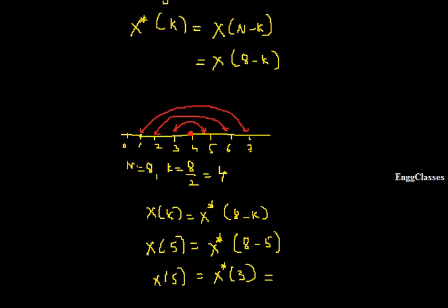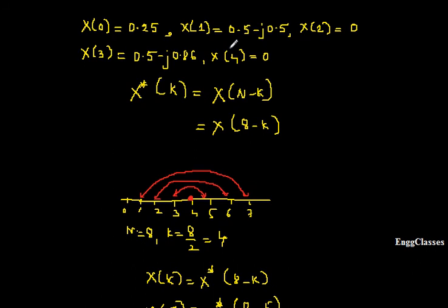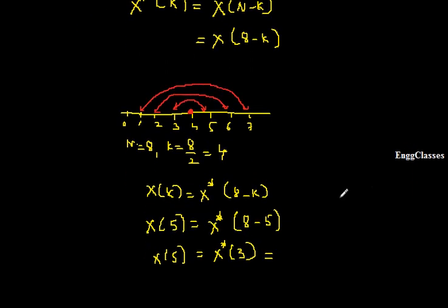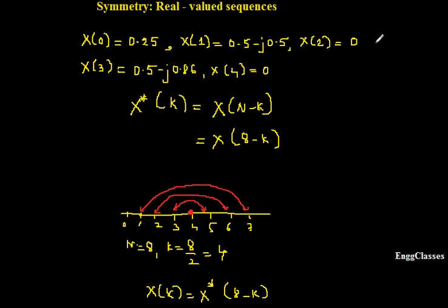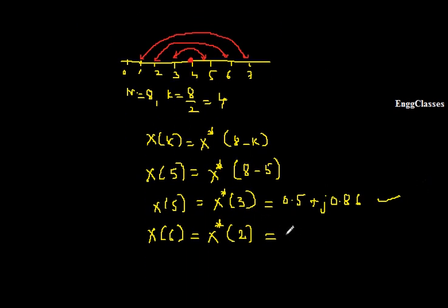x(3) has been given as 0.5 minus j0.86. Its conjugate means the real part remains as is and the sign of the imaginary part changes, so x(5) becomes 0.5 plus j0.86. This is how I find the DFT of the fifth point. Similarly, x(6) = x*(8 minus 6) = x*(2). Since x(2) is given as 0, x(6) is also 0.